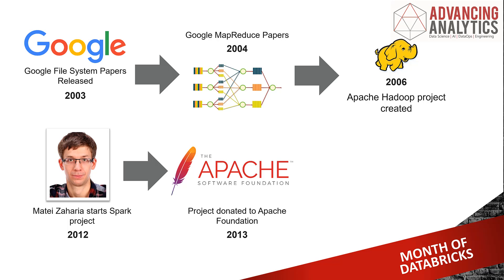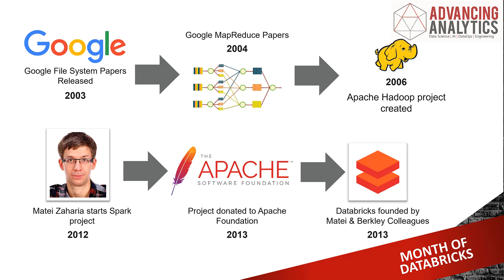But what do you do if you've made this fantastic open source project? You start a company that makes it the easiest and best way to work with that project. And that's what Databricks is. Databricks is this whole management layer around Spark, making it really easy to use. But let's have a bit of a look at Spark itself so we can understand what it is that Databricks is wrapped around.